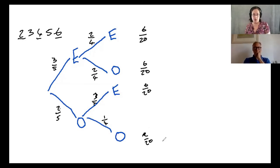So to get an even total, I must either get even followed by even, so that's that combination at the top, or odd followed by odd, so that's the branch at the bottom. And six twentieths together with two twentieths comes to eight twentieths. So I get the probability of winning eight twentieths, which is the same as you got in the sample space diagram.